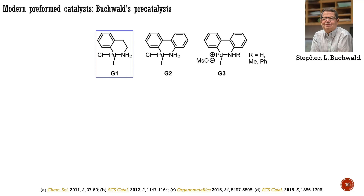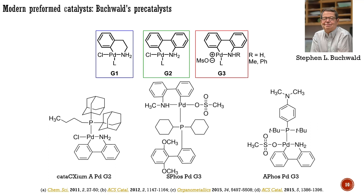First-generation Buchwald palladacycles also require a multi-step synthesis involving unstable organometallic intermediates. The second-generation palladacycles possess a more acidic aromatic amine and can be activated using a weak base at room temperature. However, larger ligands such as BrettPhos and tert-BuXPhos cannot be incorporated. The third-generation palladacycles replace the chloride in the first and second-generation palladacycles with a less coordinating and more electron-withdrawing mesylate counter-anion, allowing for the incorporation of larger ligands. Here are presented three examples: the second-generation pre-catalyst bearing Beller's phosphine and third-generation pre-catalysts with SPhos and APhos respectively. Many more pre-catalysts are available through common chemical suppliers.